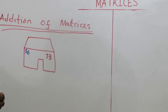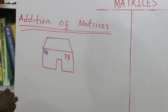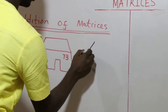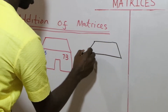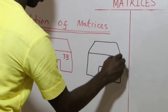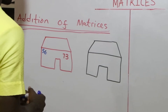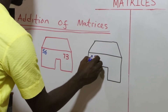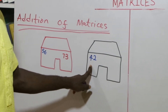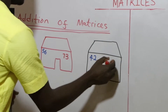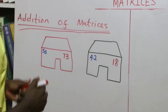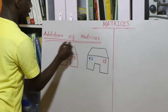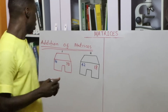And you have 73 Manchester United jerseys. That is one of your stores. Now you have another store somewhere in Southampton in the UK, and you also sell Chelsea jerseys and Manchester United jerseys. So let's assume you have 42 Chelsea jerseys in this store and 18 Manchester United jerseys in this store. So this is store one and this is store two — you have two stores in the UK, one in London and the other one in Southampton.